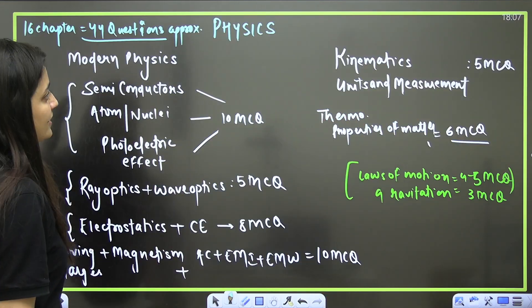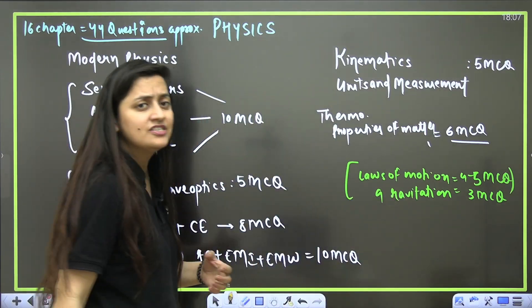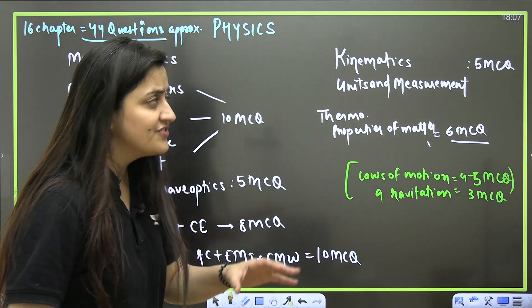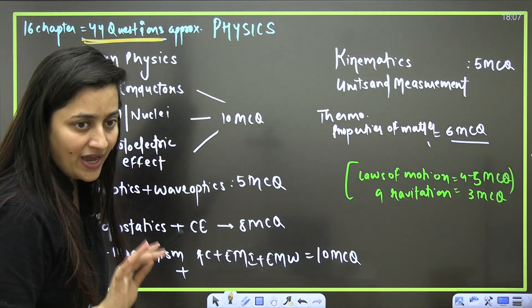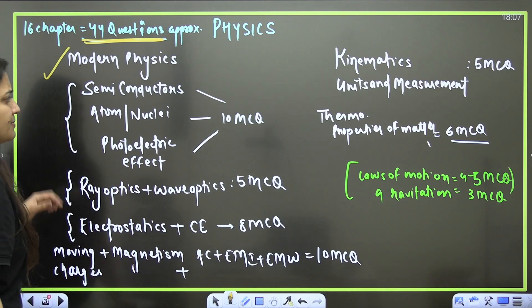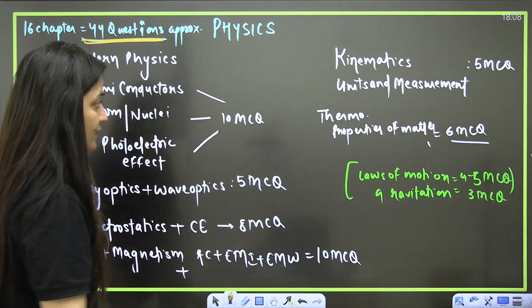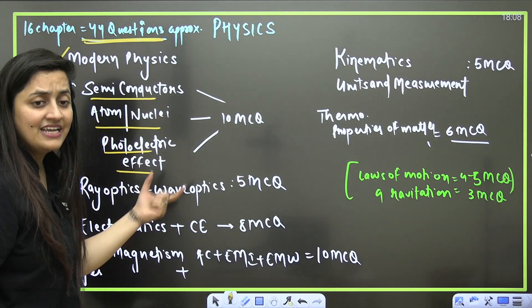Let's start with the physics part. I'm going to give you a list of around 16 chapters from where approximately 44 or 45 questions you can attempt. Go for modern physics because it is easy and scoring. Semiconductors, atoms, nuclei, photoelectric effect—from these three you can get 10 MCQs approximately.